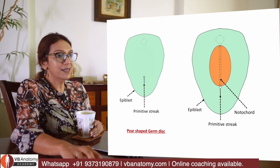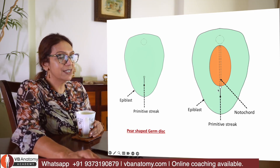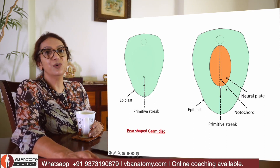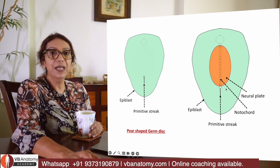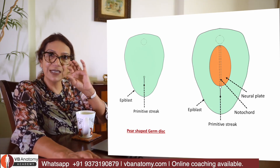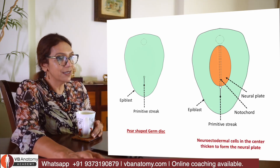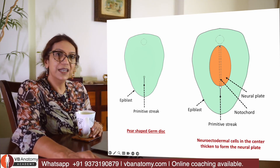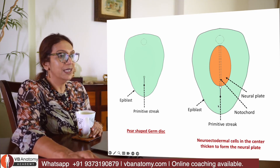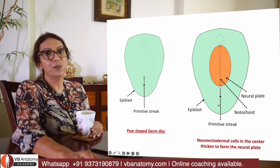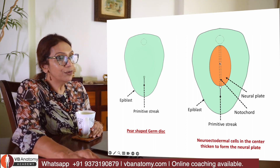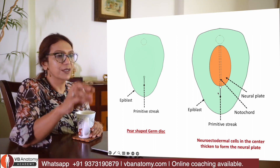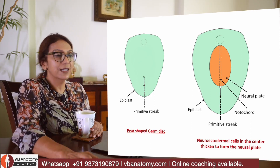The cell layer lying above the notochord thickens to form the neural plate. Neuroectodermal cells in the center of the epiblast thicken to form the neural plate. Focus on these orange cells — just remember these orange cells.